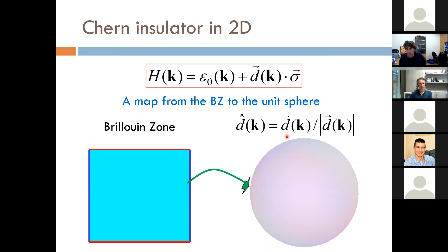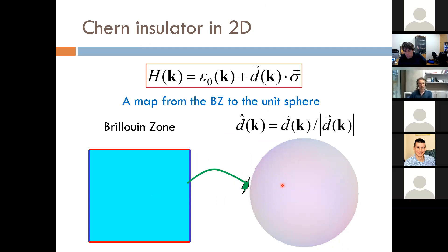Let's take a simple model for a two-band system — something that could be a Chern insulator. It's described by a two-by-two matrix which maps the Brillouin zone to the unit sphere via a vector d, assuming a band gap so d is always nonzero. There are two situations: one where the mapping from the Brillouin zone to the unit sphere covers the full sphere — that's a topological phase — and one where it doesn't, which is topologically trivial.